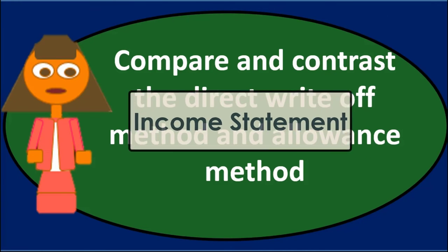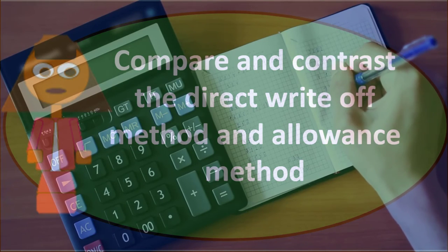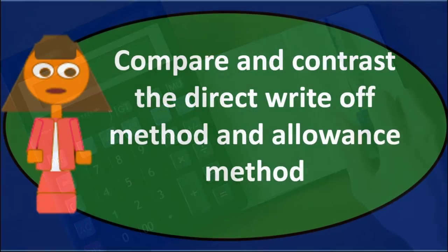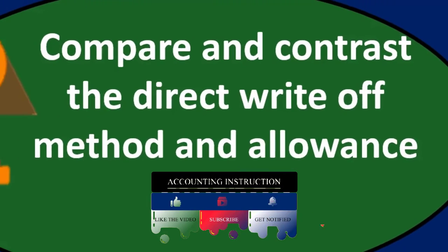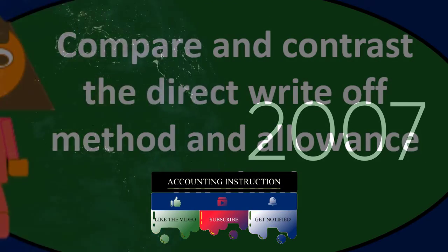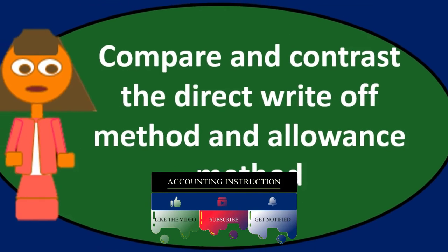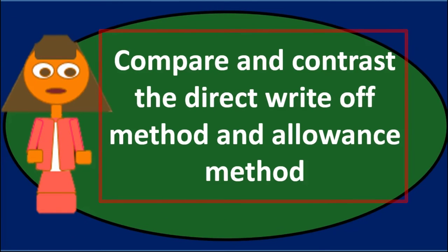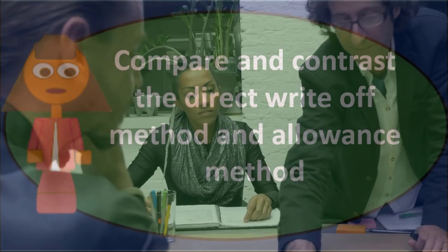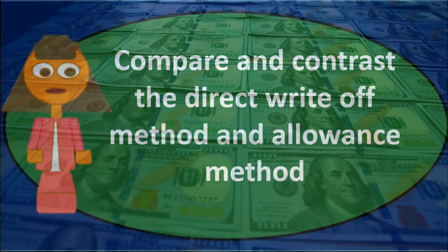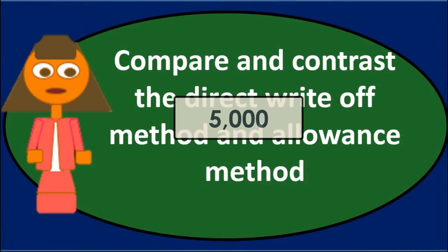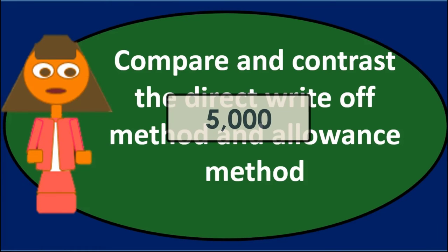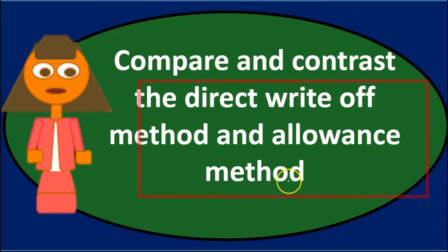On the income statement side under the allowance method, we report our revenue and then estimate bad debt expense related to the revenue actually earned in that same time period — not bad debt from prior periods. For example, if we earned a hundred thousand in revenue, we estimate that perhaps five thousand of it will not be collectible based on past history, and we record that bad debt expense in the same period. This properly applies the matching principle.